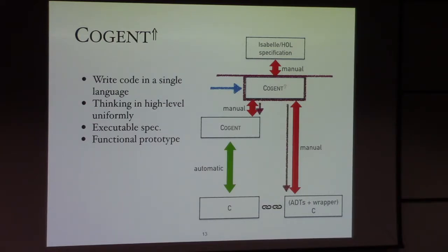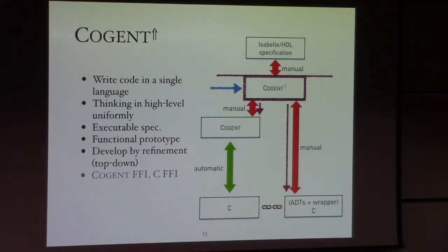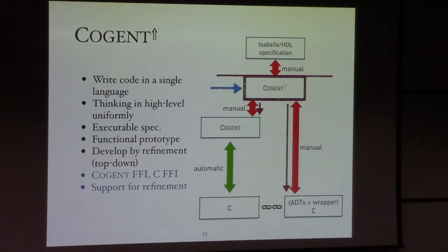From there, we can incrementally refine the Cogent-up program to Cogent and to C as desired. We are aiming for this refinement-based development. This top-down approach requires Cogent-up to have the ability to connect to Cogent and to C — luckily, since Cogent-up is mainly a language extension to Cogent, the Cogent-up to Cogent interface is trivial. For the Cogent-up to C interface, we can borrow that from Cogent. We also want Cogent-up to support refinement because the whole development process is refinement-driven.